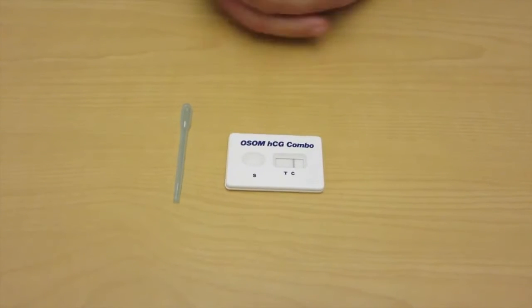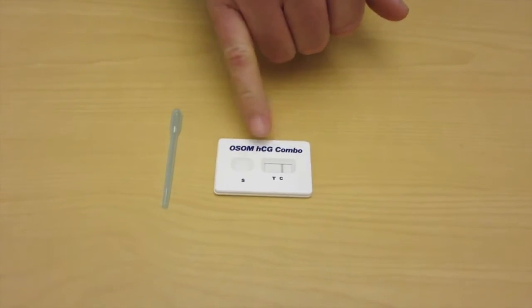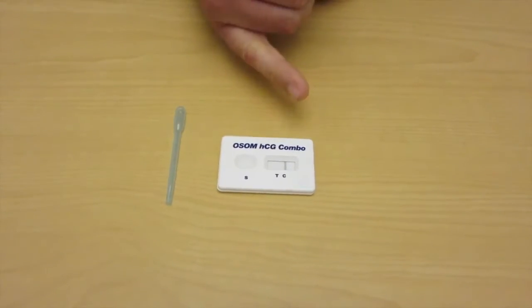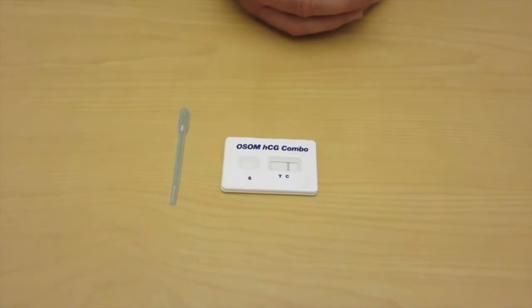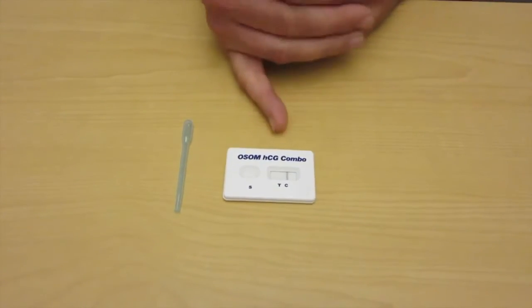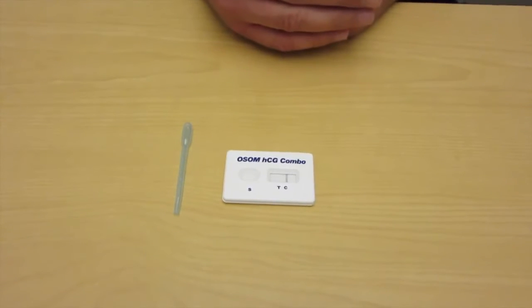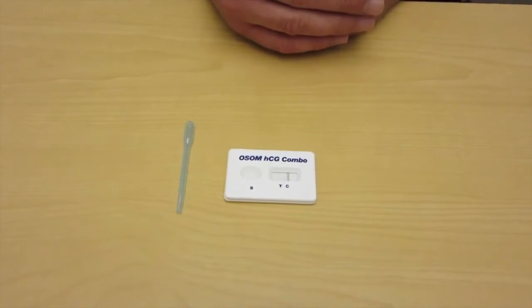Okay, so three minutes have transpired, or expired, and we have seen we have a control line nice and firm. There's absolutely no line on the test, so we're good to go. This is a negative pregnancy test, and we can proceed with our cares as indicated for a non-pregnant female patient.